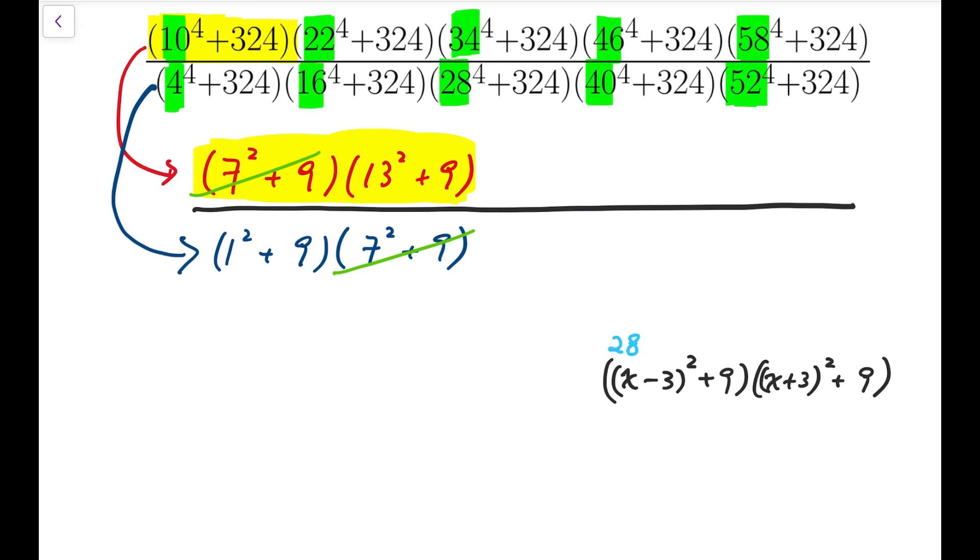For 28, I will get 25 all squared plus 9, 31 squared plus 9, while for 34, I will get 31 squared plus 9 and 37 squared plus 9. Now, these two terms are going to cancel out, so we can do the same thing on all other components.